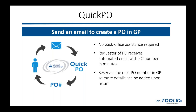Quick PO really helps enable your field resources. Someone can just send an email with the vendor information, it will go through an automated process, and return back a PO number. So if someone is standing at one of your suppliers and needs a purchase order number to pick up supplies — if you're unable to reach the back office — you simply send an email with the vendor name, it returns a PO number, and the back office can add details later.